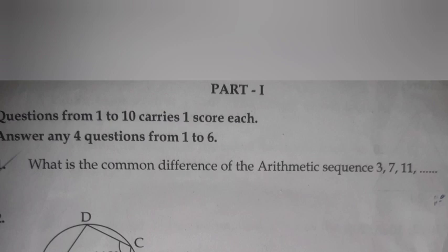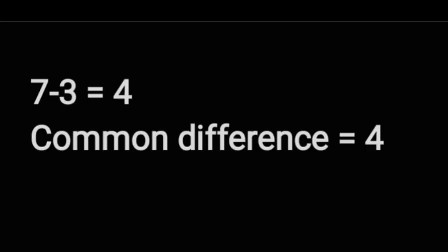Question 1: What is the common difference of the arithmetic sequence 3, 7, 11, etc.? 7 minus 3 is equal to 4. Common difference is 4.